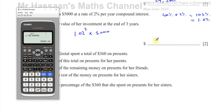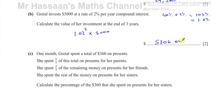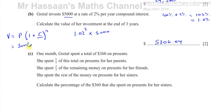The answer is $5,306.04. There is also a formula: the new value equals the principal times (1 + R/100) to the power of N, where R is the rate and N is the number of years. Here R = 2, N = 3, so it's 5,000 times (1 + 2/100)³ = 5,000 times 1.02³ — the same thing. But I prefer to do it without the formula.